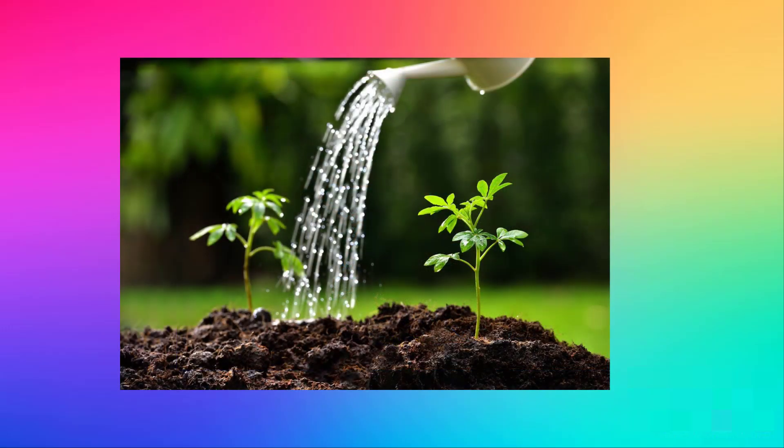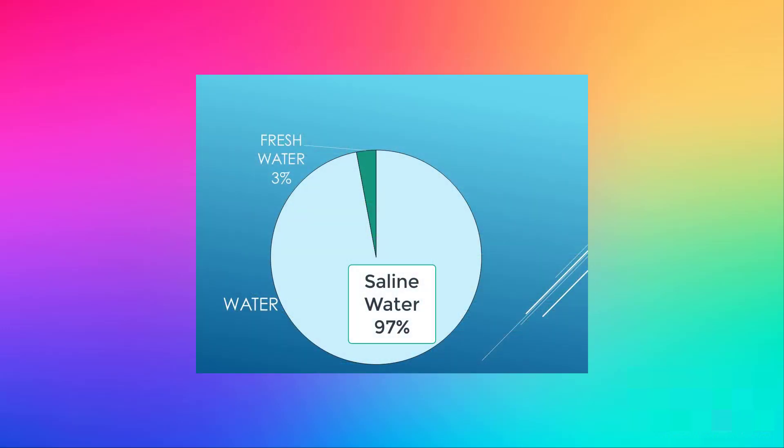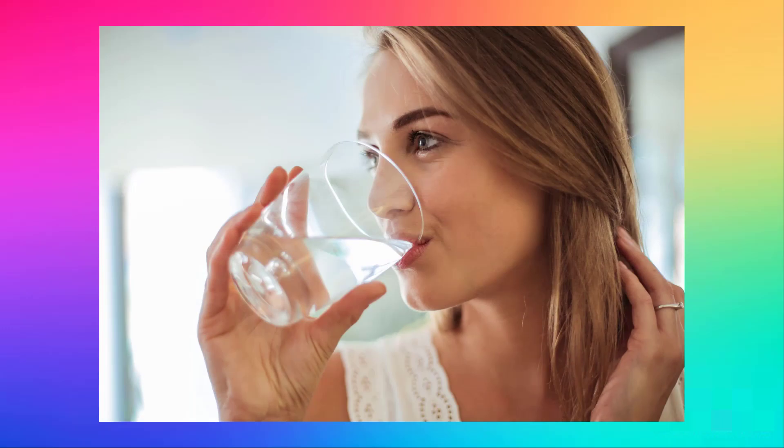Animals need water for drinking and bathing. About 75% of our earth's surface is covered with water. But most of this water is saline as it is present in seas or oceans.